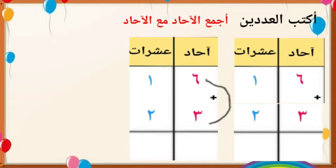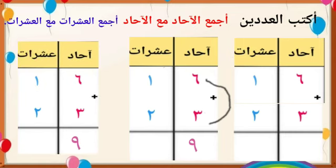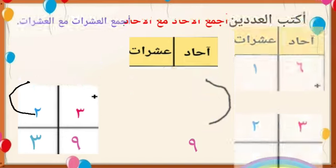ستة زائد ثلاثة يساوي تسعة. جيد. الخطوة الثالثة: نجمع العشرات مع العشرات، أي عشرة واحدة وعشرتان، كم يساوي؟ أحسنتم، يساوي ثلاث عشرات. إذن المجموع: تسعة وثلاثون. ماذا نسمي هذا الجمع؟ الجمع العامودي.